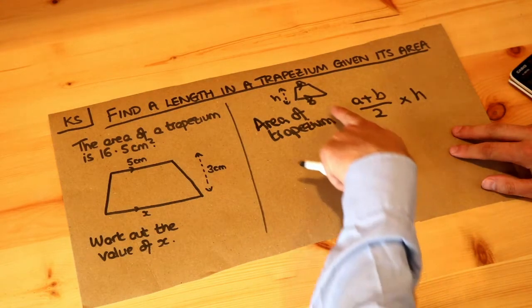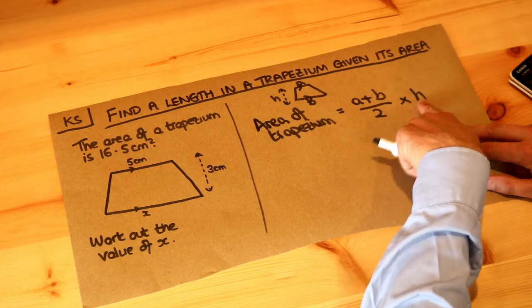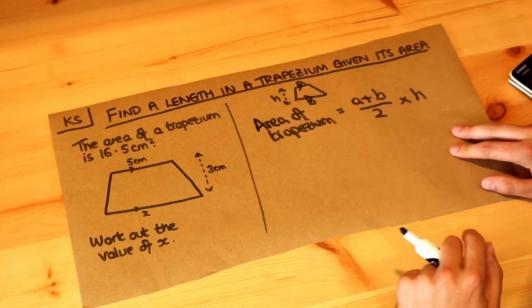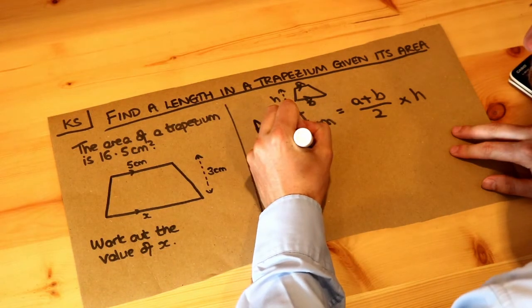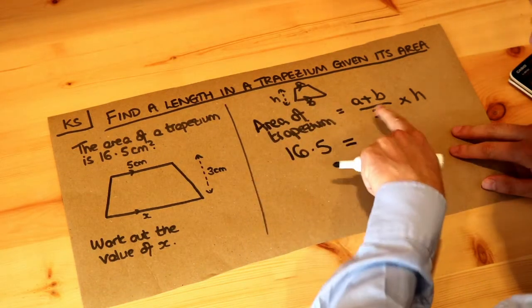As I said previously, we would normally have all three lengths. So we would have a, b, and h, we just put them into this formula and that gives us the area. This time we've got the area, so we can put in the area as 16.5 and then we can put in what else we know.